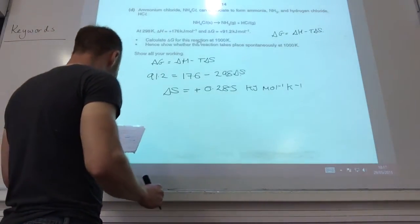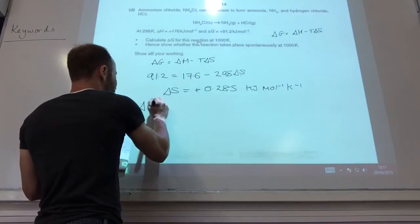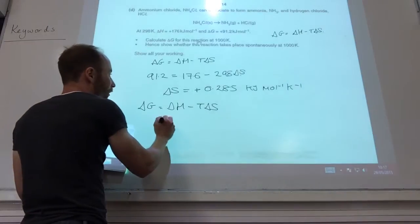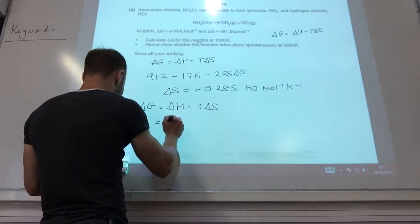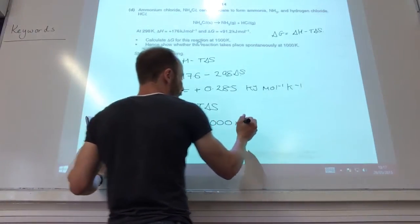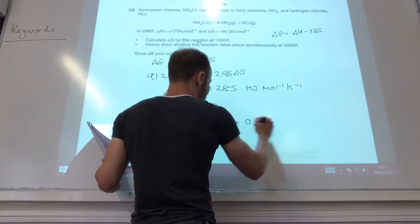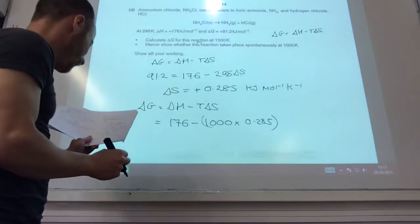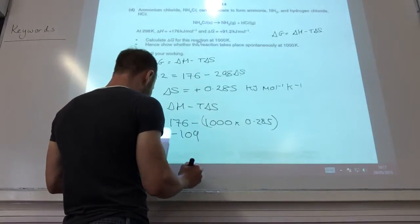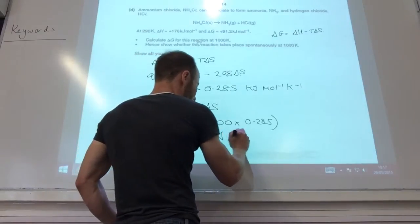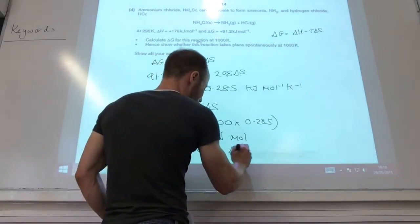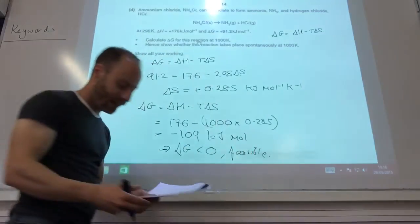Now I need to calculate delta G at 1000 K. Delta H is the same, 176. The temperature is now 1000 and delta S we worked out as 0.285. Doing that calculation gives me minus 109 kilojoules per mole. Therefore delta G is less than zero and it is a feasible reaction.